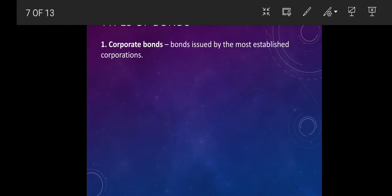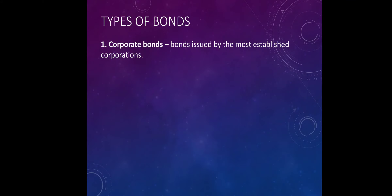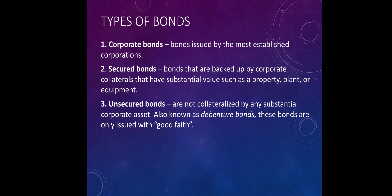Next, we have different types of bonds. First is corporate bonds — these are issued by most established corporations. Second are secured bonds, which are backed up by corporate collaterals that have substantial value such as a property, plant, or equipment. On the contrary, if the bond is not secured by a collateral, you call it an unsecured bond, also known as debenture bonds, because these bonds are issued only with good faith and no collateral.